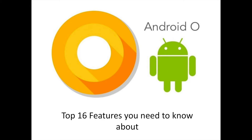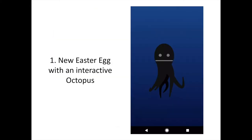The nondescript O logo is found when you go to Settings, then System, then About Phone, and tap on Android version multiple times. However, now when you long press on the O, an interactive Octopus shows up. Is it an indication concerning the future name of Android O?